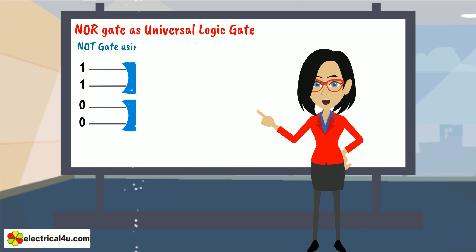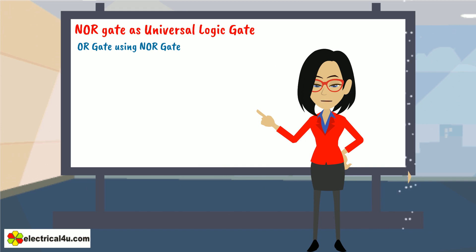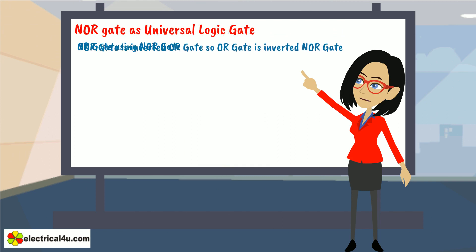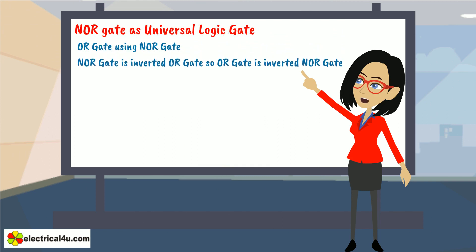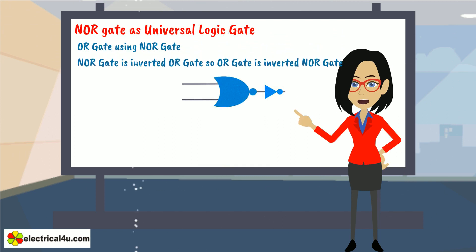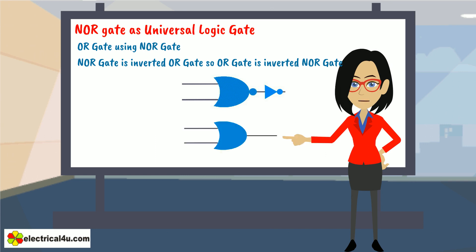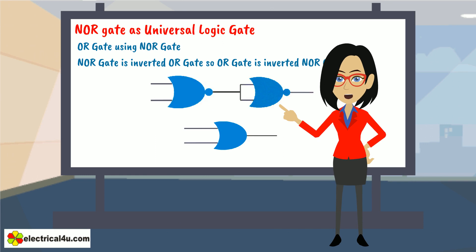Now we will try to realize an OR gate using NOR gates. A NOR gate is an inverted OR gate, so an inverted NOR gate will be equivalent to an OR gate. A NOR gate followed by another NOR gate will be equivalent to an OR gate. Here we use the NOT gate realized from a NOR gate. The logic circuit of this OR gate is as shown here.